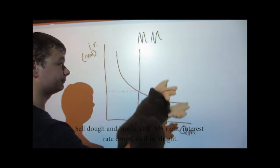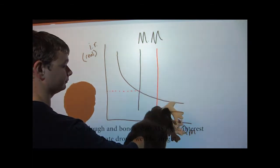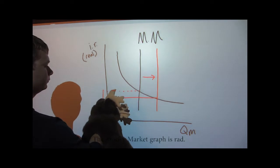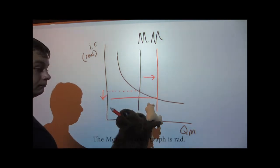Sell bonds and bonds, shift M that's right. Interest rates drop, we'll be alright. The money market graph is red.